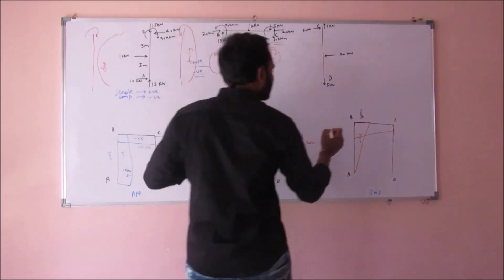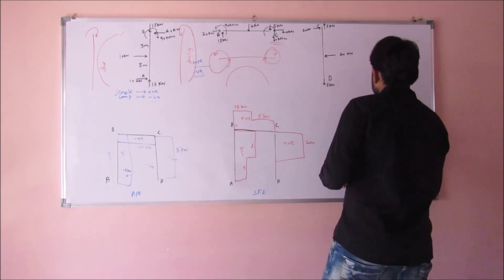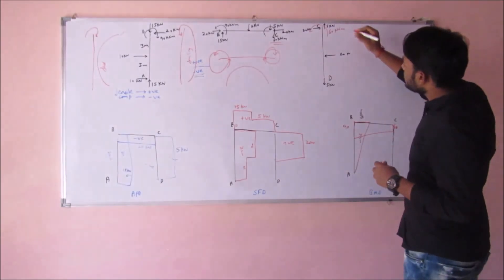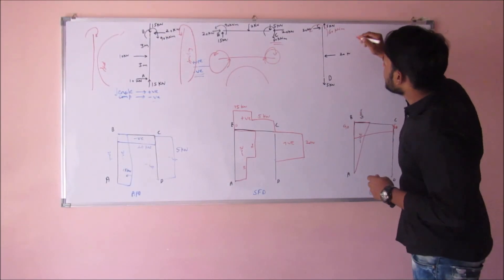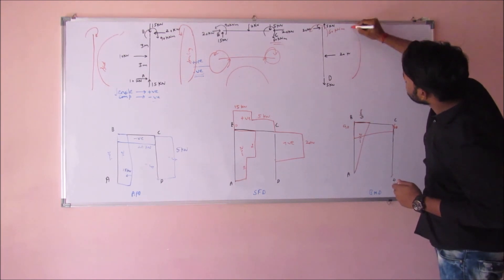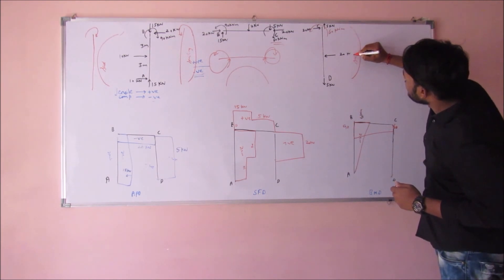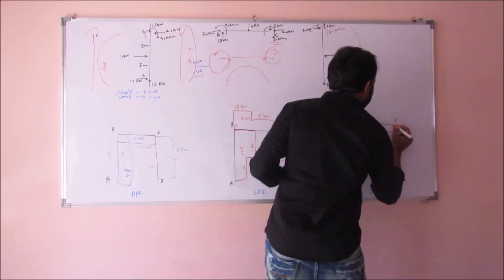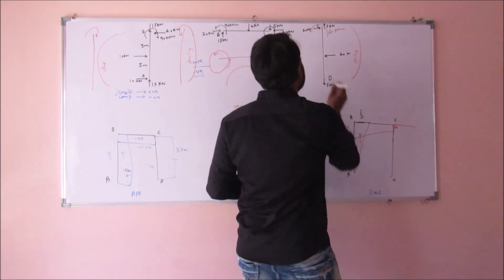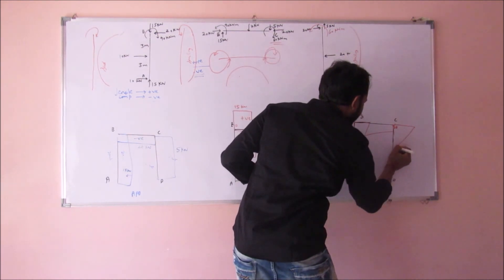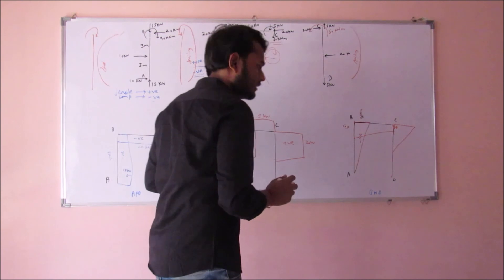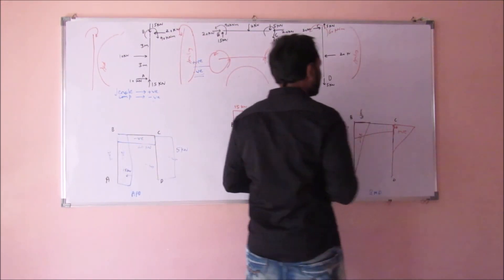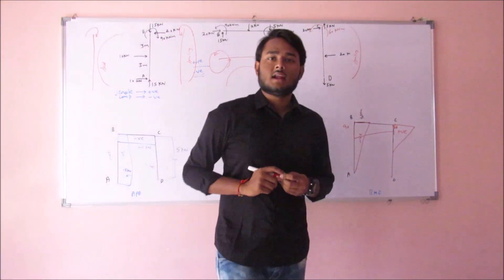Now we have to draw the BMD for member CD. For member CD, the 60 kNm moment is in the anti-clockwise direction. Due to this, a smiling face is produced — and smiling means positive. So this 60 kNm moment is in the positive direction. Here the moment becomes zero, so there will be an inclined line. As in the SFD there is a horizontal line, this is positive. So here we are done analyzing the given portal frame.